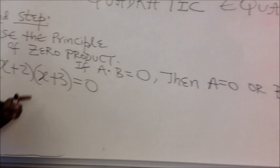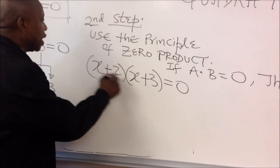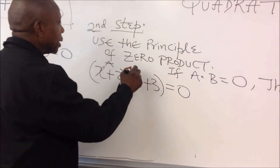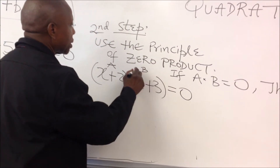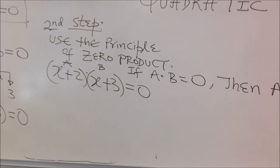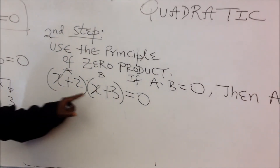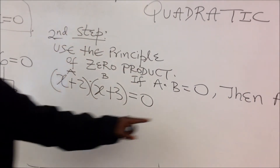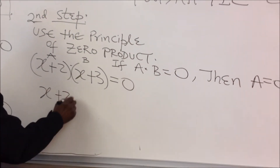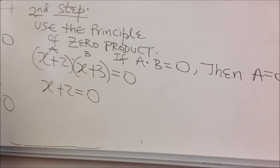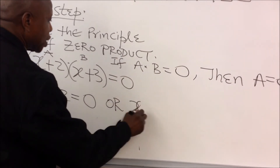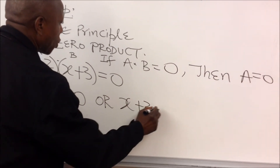So in this problem, our a is going to be x plus 2, and our b is going to be x plus 3. Using the principle of zero product, we can break this down into: x plus 2 equals 0, or x plus 3 equals 0.